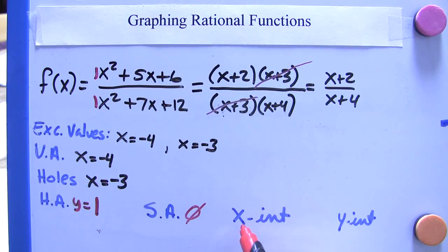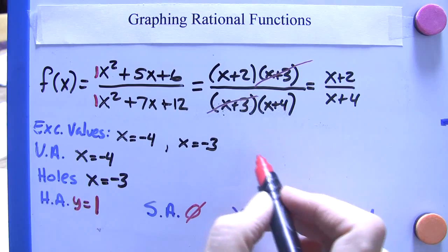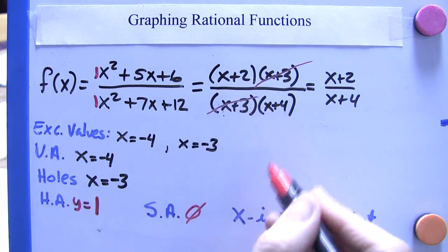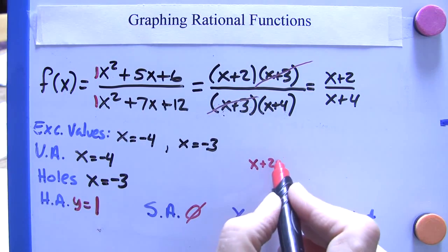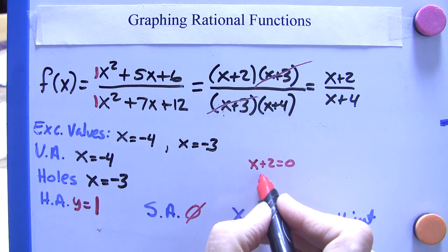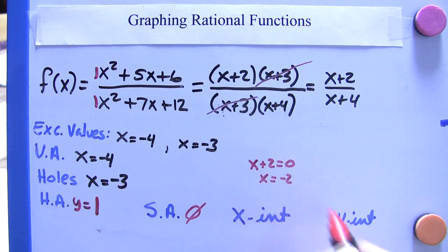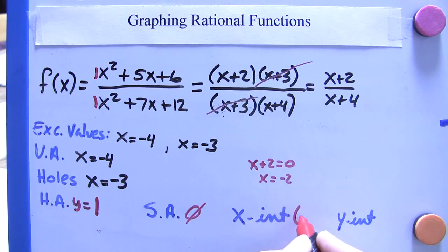Now for the x-intercept. Let's set the numerator equal to 0. So we only need to deal with this value this time. x plus 2 equals 0. Well, that's x equals negative 2. So there's an x-intercept at negative 2, 0.